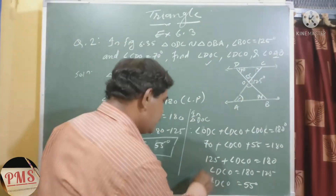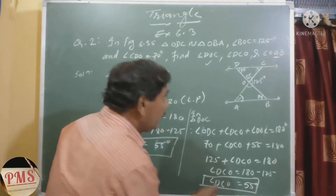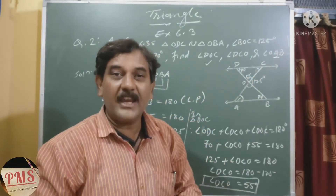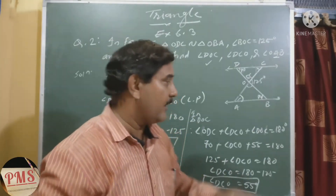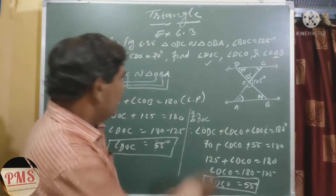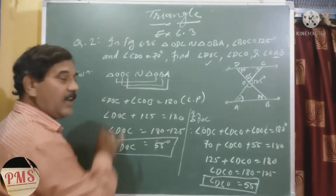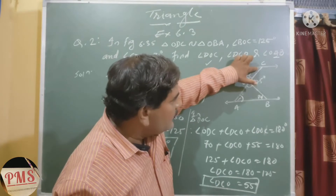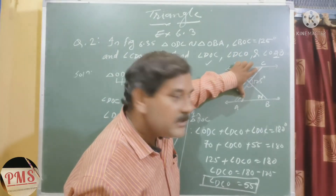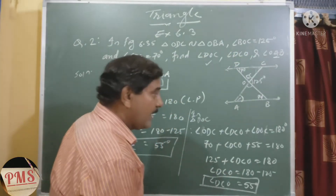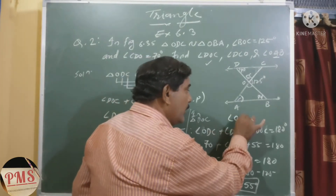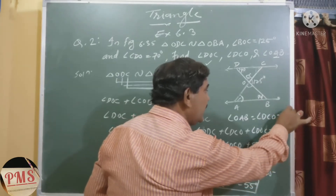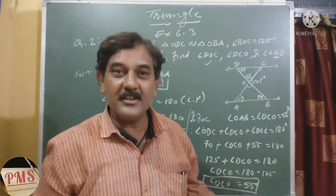Now for the third part, we need to find angle OAB. Since angle A corresponds to angle C in the similar triangles, angle OAB equals angle DCO, which is 55 degrees. That is the answer.